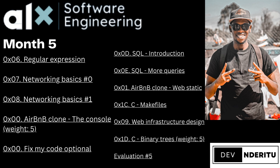Another major project with a weight of five is implementing binary trees in C. This project was pretty challenging — there were 19 mandatory tasks and 23 advanced tasks. Out of all of them, I only failed one advanced task and got all the others, which was a solid result.